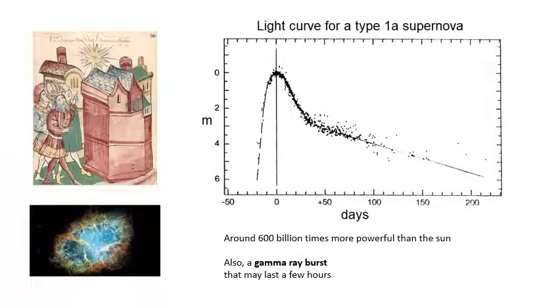This is a light curve—a graph of apparent magnitude against time. You should be able to recognize this and sketch it. Notice that from nowhere you get a very very bright object up to a magnitude of zero, but then it gets dimmer and dimmer and dimmer. After several weeks it's faded away, perhaps not even visible to the naked eye anymore. When the supernova occurs, it gives off about 600 billion times more power than the sun.